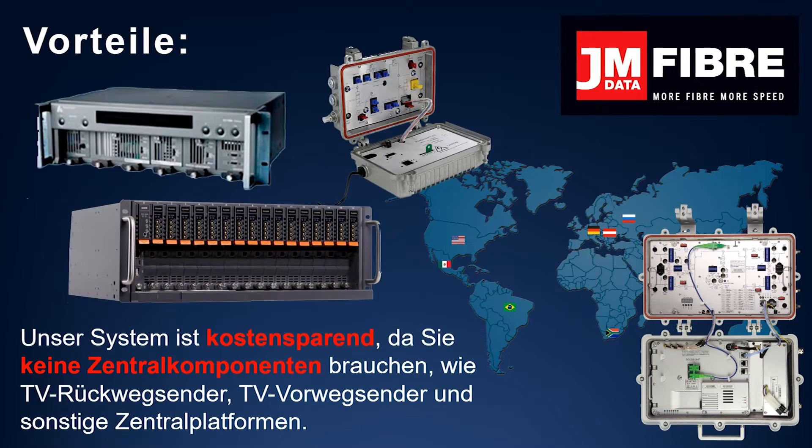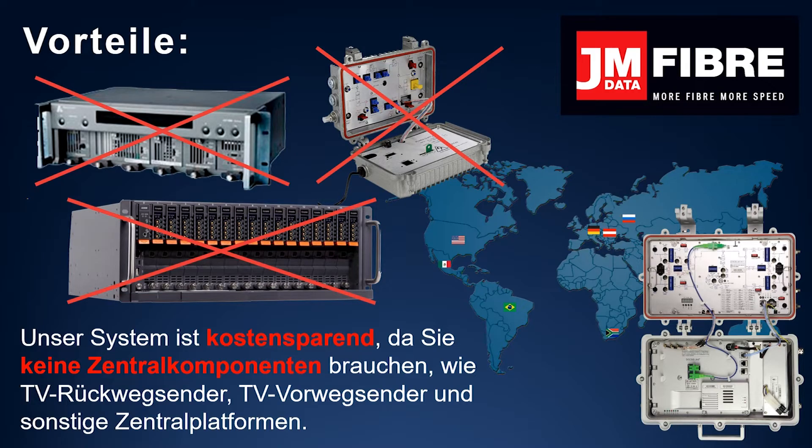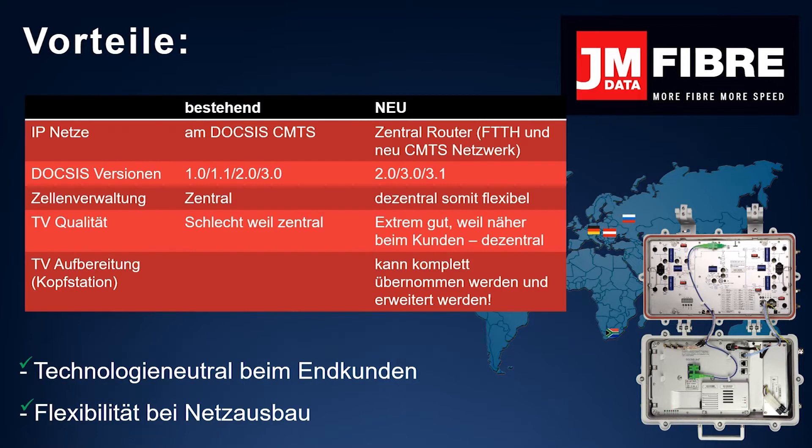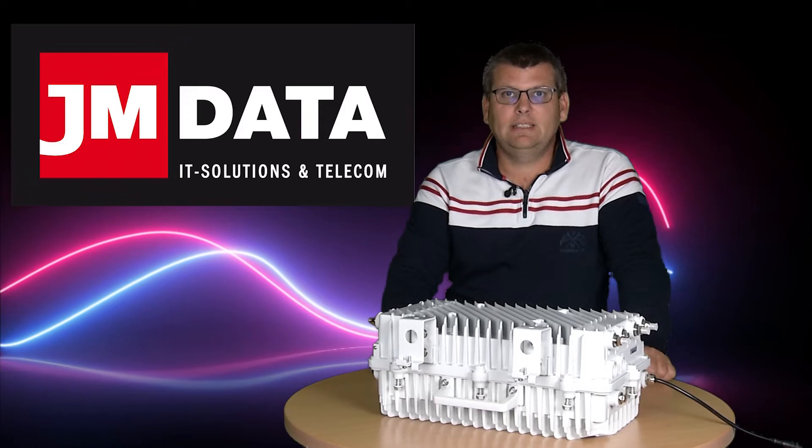Our system saves on costs because you don't need any central components like return path TV transmitters, advanced path TV transmitters or other central platforms. With our variant, you can use the same IP addresses as with FTTH products, so a switch of technology is possible any time. What's more, our variant is more flexible because you can manage every output yourself, choosing between DOCSIS 2.0 or DOCSIS 3.0 or indeed DOCSIS 3.1 or simply mixed.